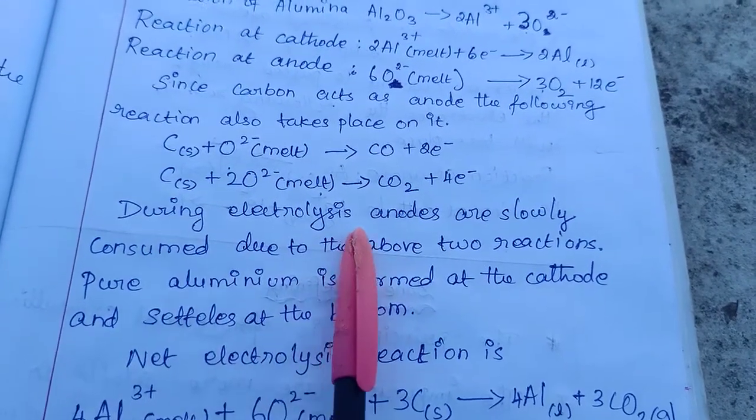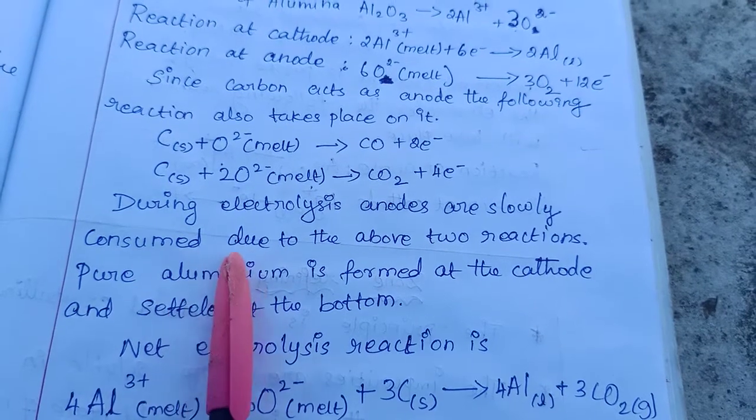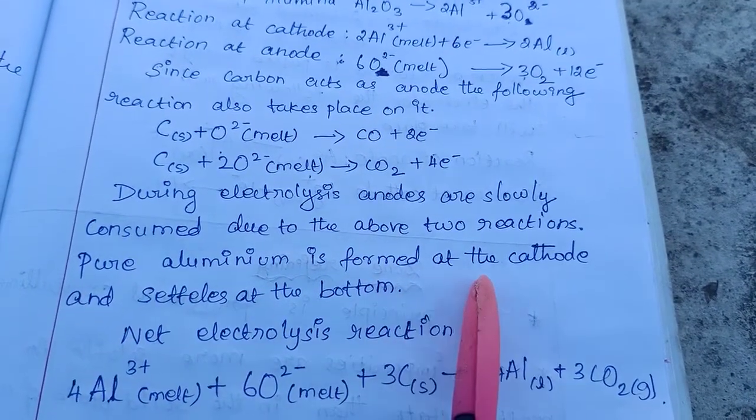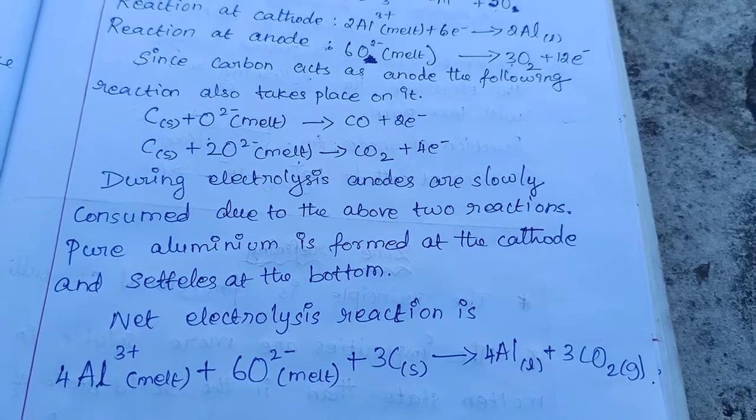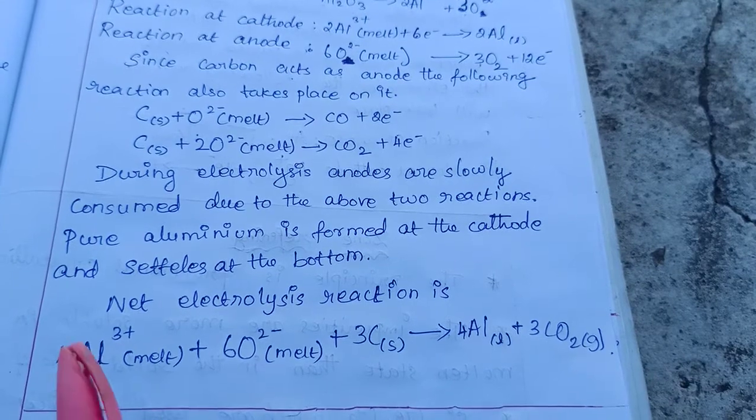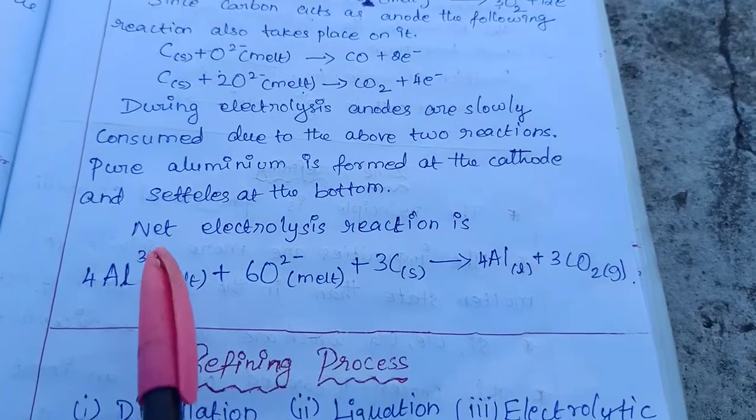During electrolysis, the anodes are slowly consumed due to the above two reactions. Pure aluminum is formed at the cathode, while impurities settle at the bottom.